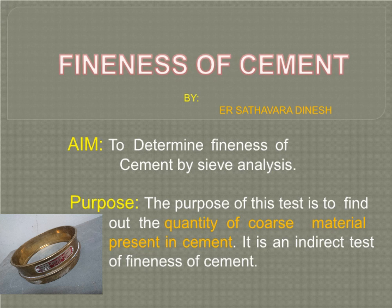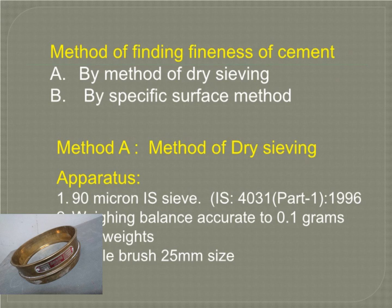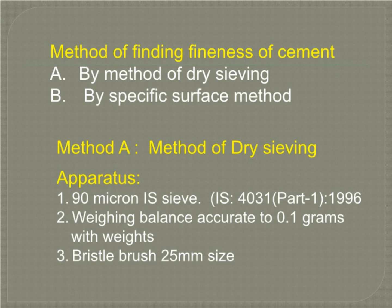It is an indirect test of fineness of cement. There are two methods for finding fineness of cement: by method of dry sieving and by specific surface method. Today we are going to study about the method of dry sieving.